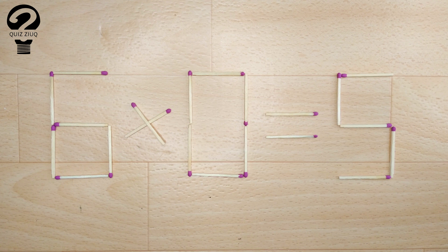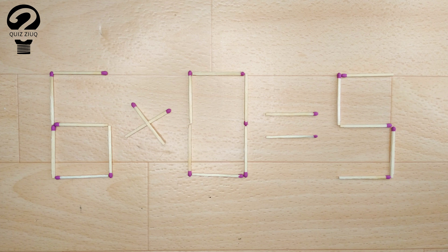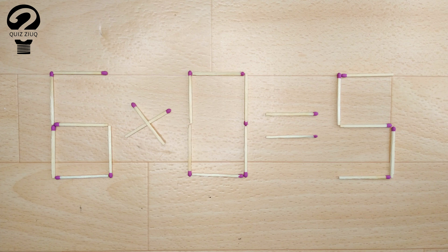Here's the next puzzle. We have this equation, 6 times 0 equals 5. Our equation is incorrect, and we need to move two matches to make our equation correct.